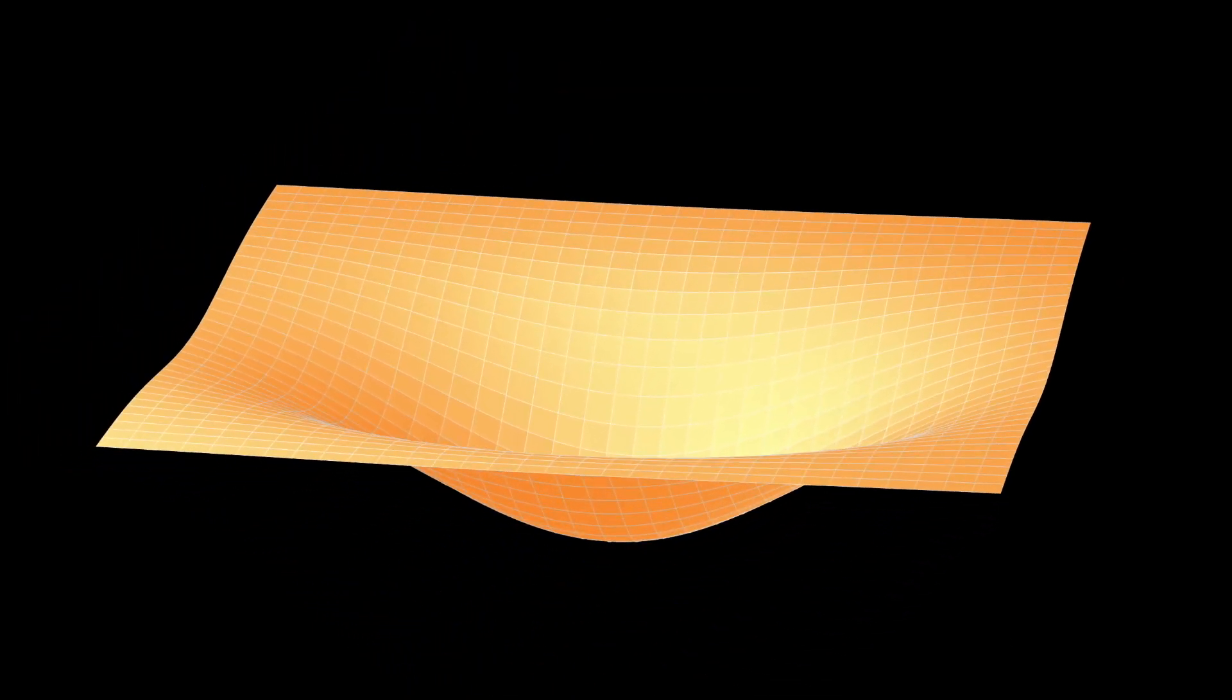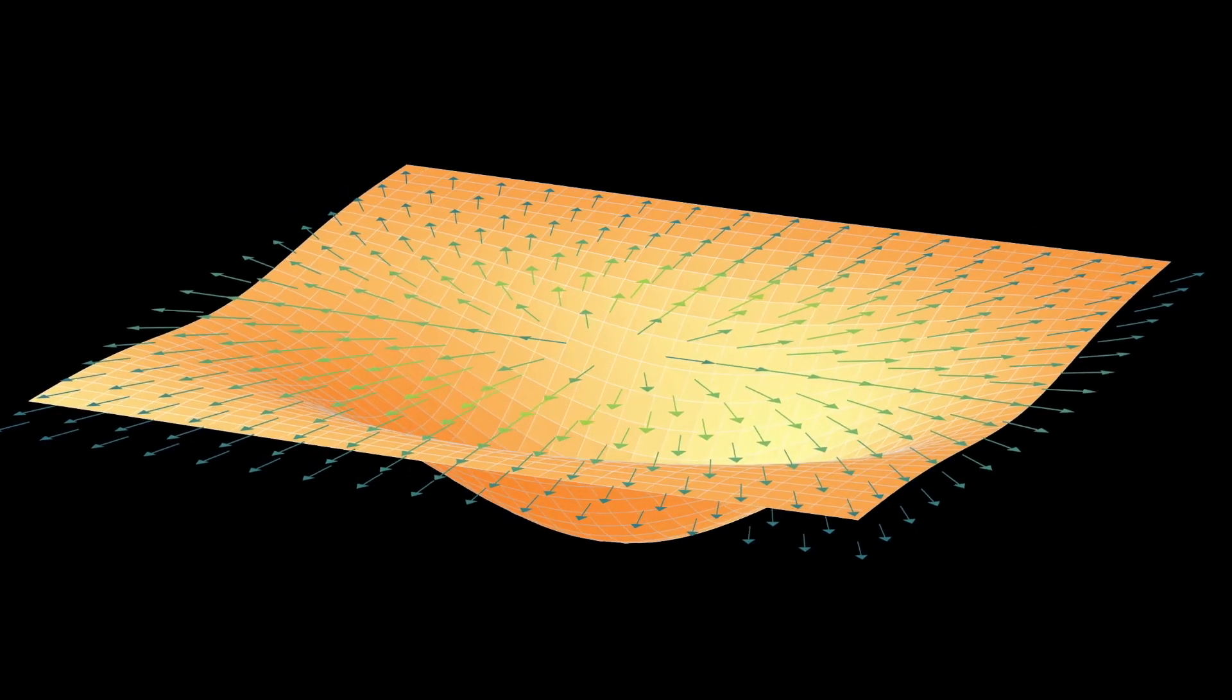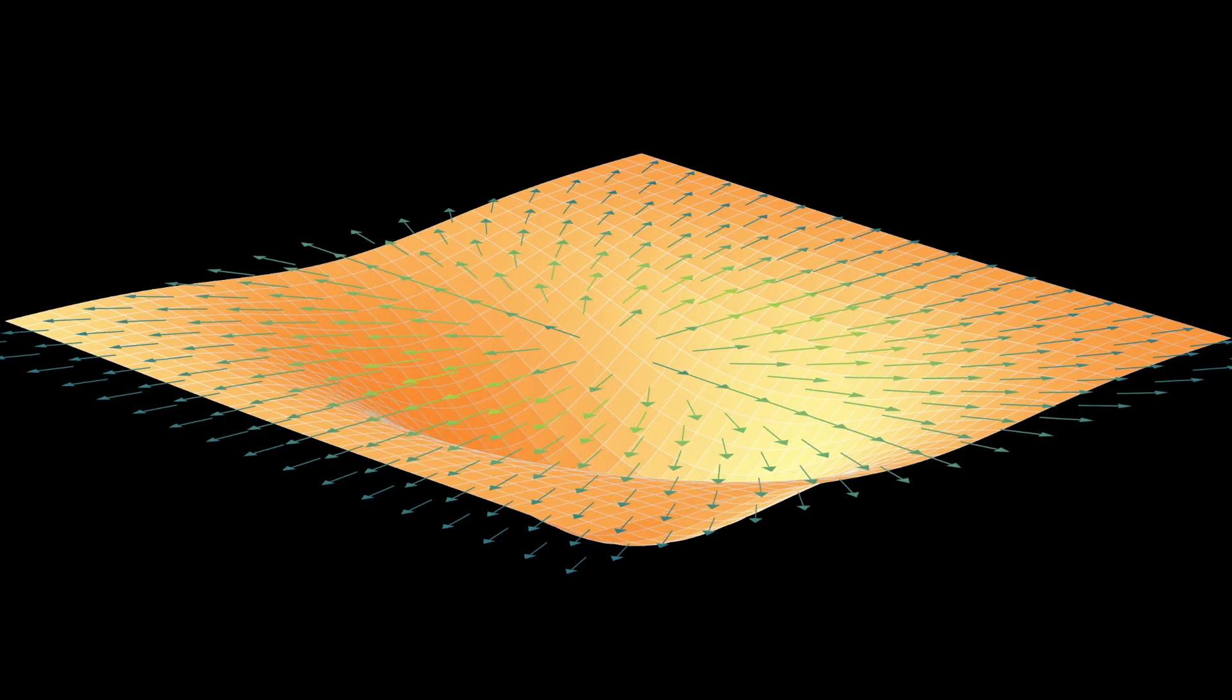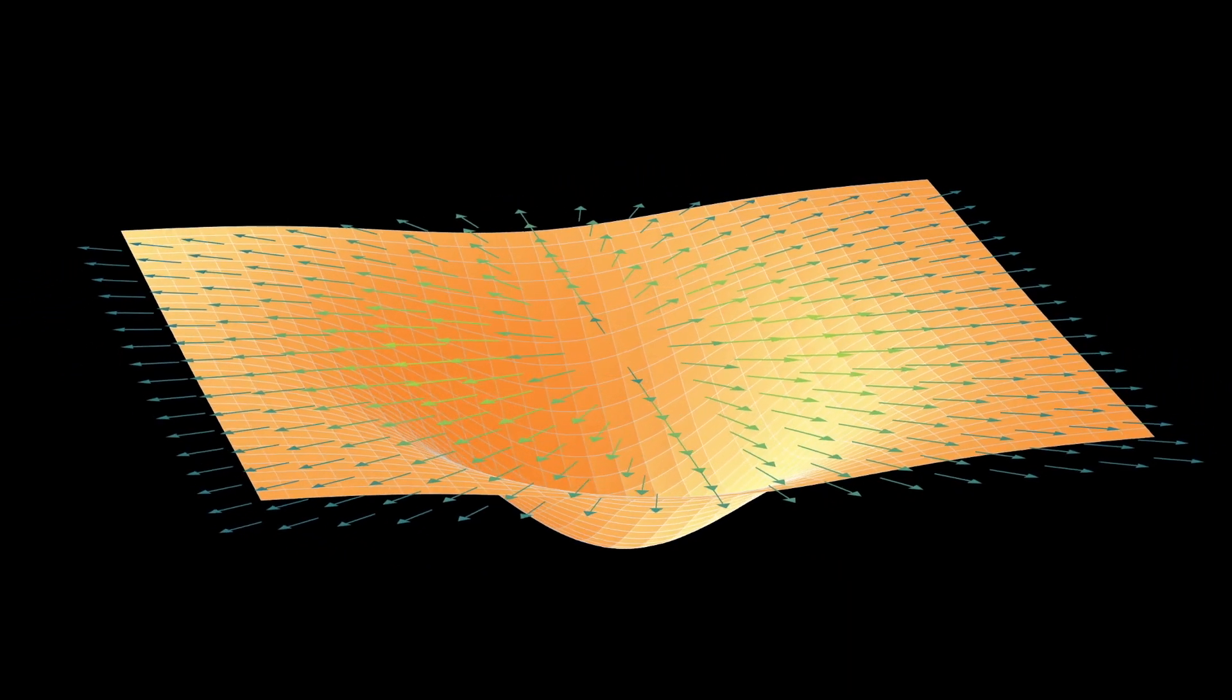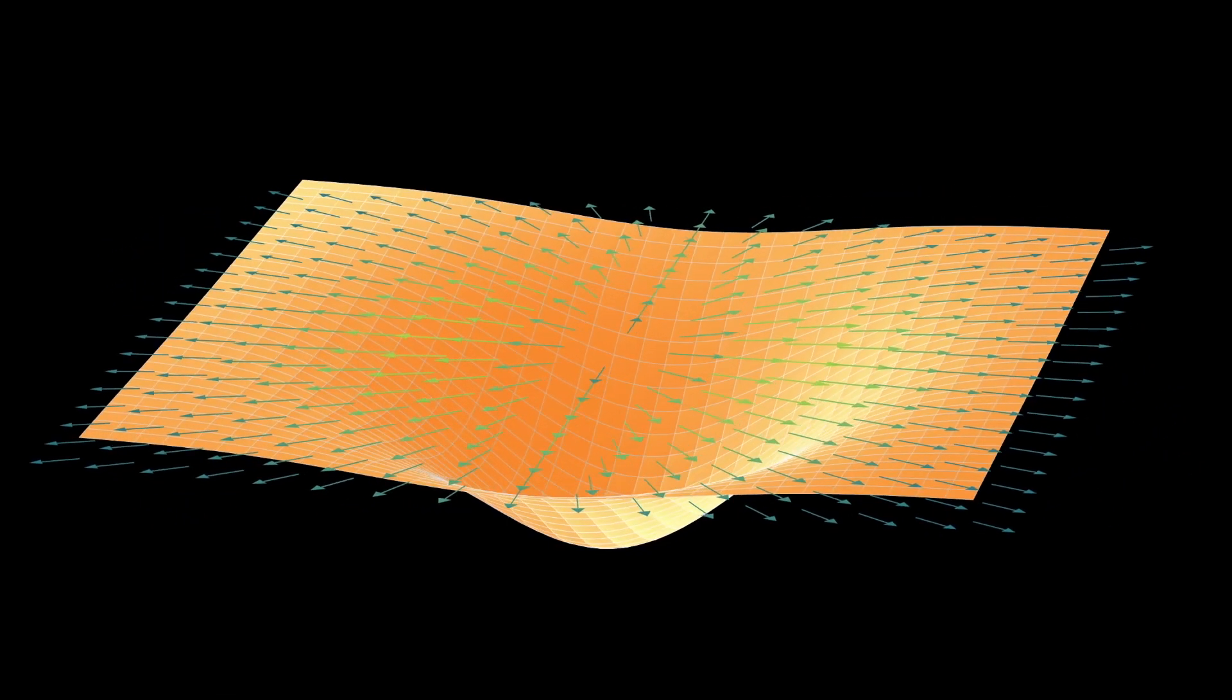I think it's worth going back to this figure that I showed you earlier. The gradient takes a function from R^n to R and produces a function from R^n to R^n. That is, it produces a vector field. This is a function with two inputs, and it produces a two-dimensional vector field. Importantly, at every single point on this surface, the gradient tells you the direction of steepest ascent. That's why the gradient is totally crucial for optimization.